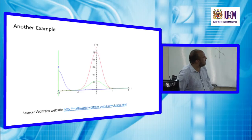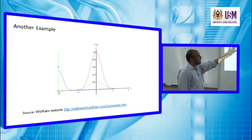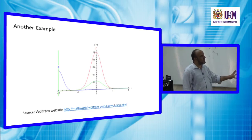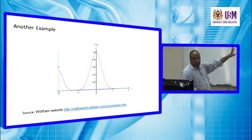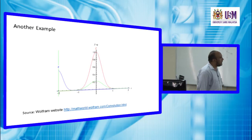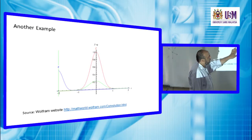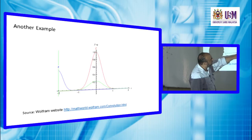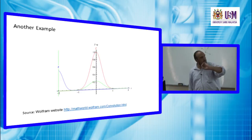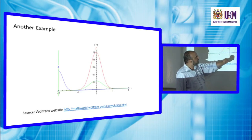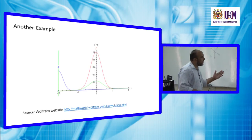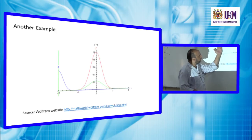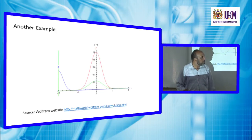Another example uses the Gaussian function, also known as the normal distribution function, which is also symmetric. One function is flipped and then shifted. The dashed curve represents the amount of overlap between the two functions as we shift in time or space.